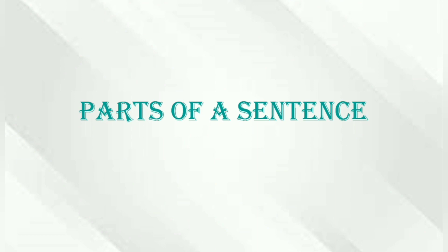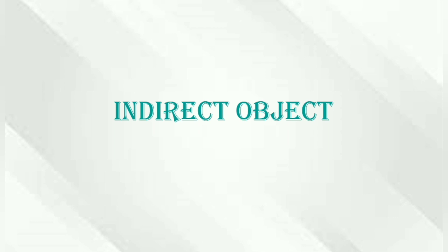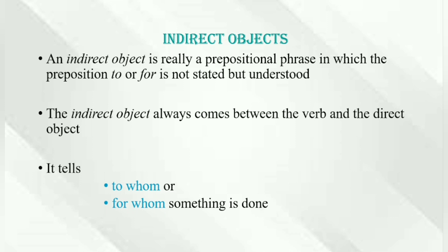Assalamu alaikum. Last time we covered the direct object. In this lesson we have the indirect object. A direct object is something that receives the action directly. An indirect object is always positioned between the verb and the direct object, and it tells us to whom or for whom something is done.